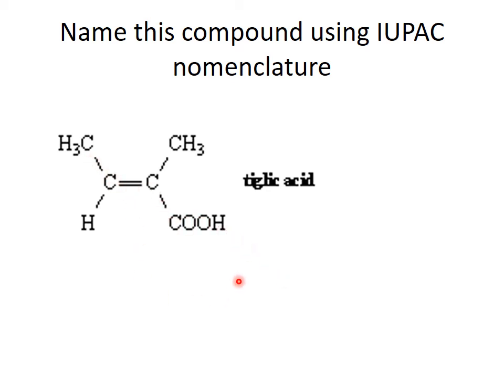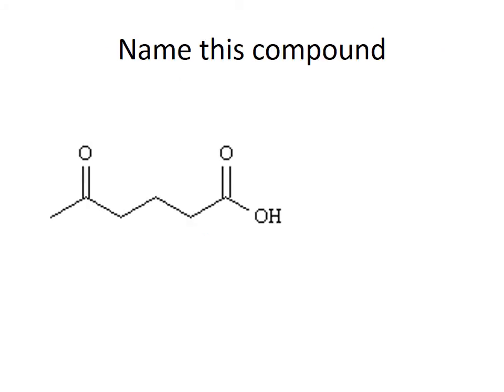Name this compound using IUPAC nomenclature. The longest chain here is 1, 2, 3, 4 carbons, so this is going to be a butenoic acid. On the number two carbon, we have a methyl group, so it's 2-methylbutenoic acid. Of course, we have to specify whether it's E or Z. You can see that the priority groups are opposite each other, so it is E. The full name is E-2-methyl-2-butenoic acid.